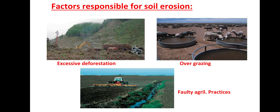Much of the soil erosion in India is caused by faulty methods of agriculture. The most outstanding problems include wrong plowing, lack of crop rotation, and the practice of shifting cultivation.